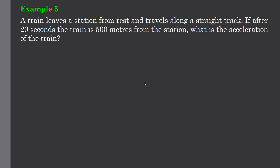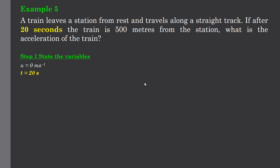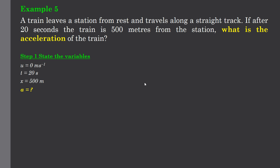Next example, a train leaves the station from rest and travels along a straight track. If after 20 seconds the train is 500 meters from the station, what is the acceleration of the train? Let's follow our process. State the variables. Starts from rest. That's got an initial u of 0 meters per second. The time it takes is 20 seconds. The distance travelled is 500 meters. And we want to know what the acceleration is.